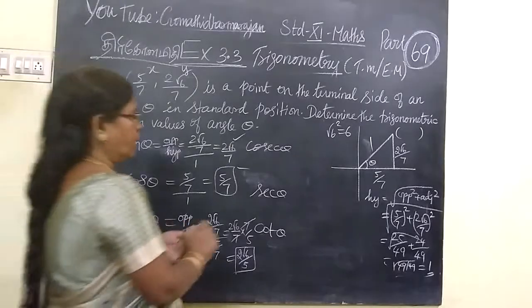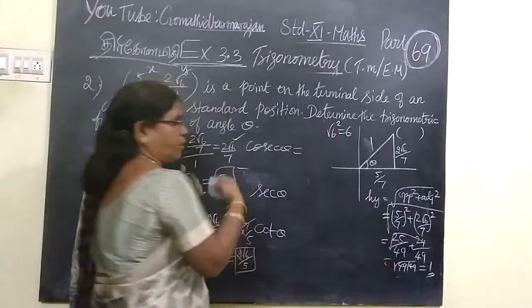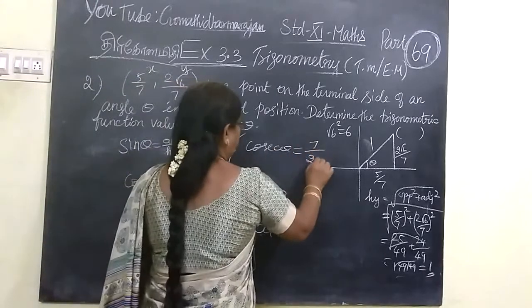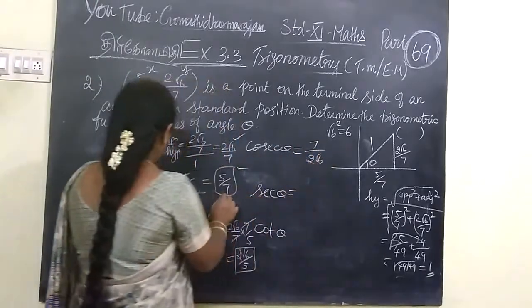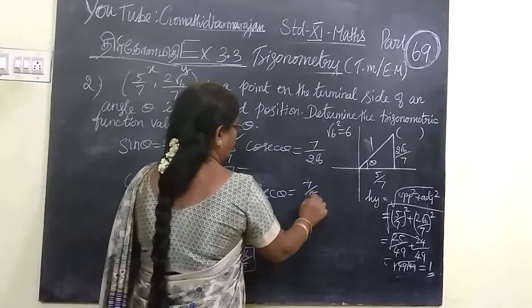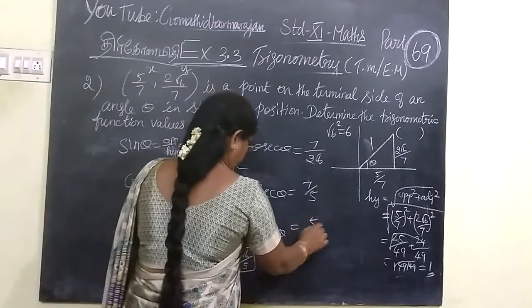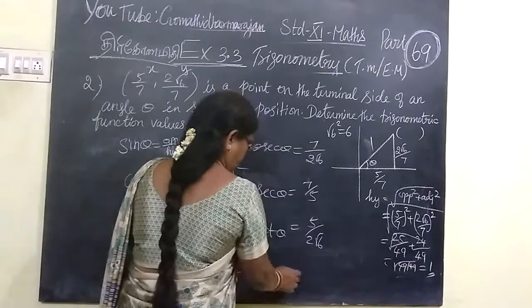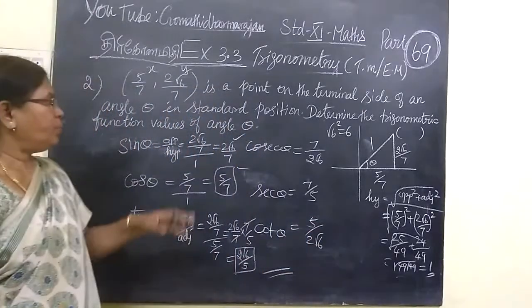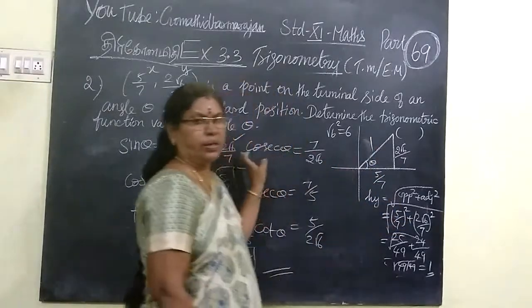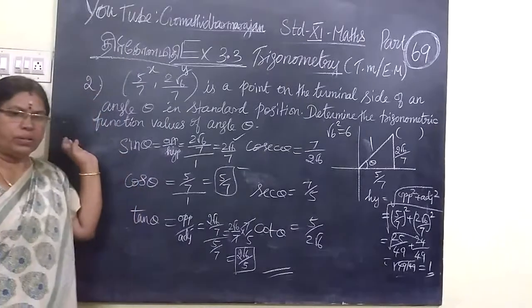For the reciprocals, just apply a reciprocal. Cosecant is 7 by 2 root 6. Secant is 7 by 5. Then, cotangent is 5 by 2 root 6. So, hope you understand. If we have a reciprocal, we will write in reciprocal form. After that, we are finishing this. Thank you.